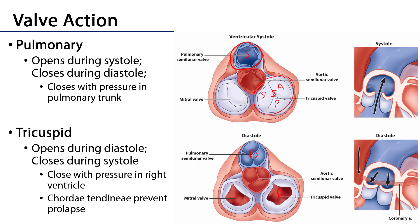The chordae tendineae attaching to papillary muscles are going to prevent the cusps of the tricuspid valve from moving back into the atria, so they hold them in place. They don't actually close the cusps — interventricular pressure buildup does that — but they do hold them in place and prevent the backwards regurgitation of blood through the valves.